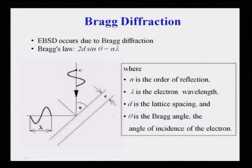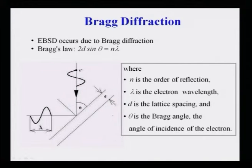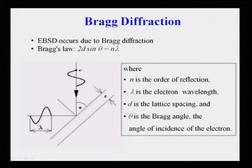EBSD occurs due to Bragg diffraction. Bragg's law is given by 2d sinθ = nλ. If the electron beam with a certain wavelength λ falls on an atomic plane of spacing d, it can get scattered by Bragg's law at angle θ, where n is the order of reflection — normally one for X-rays but can be more than one for electron diffraction. Whenever the electron beams scattered by lattice planes satisfy Bragg's law, there will be diffraction detectable by camera as EBSD patterns.